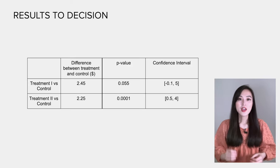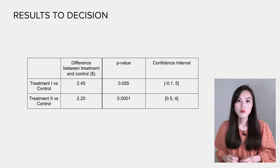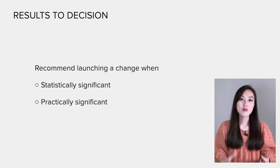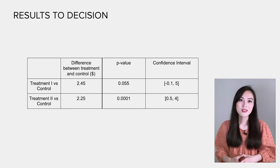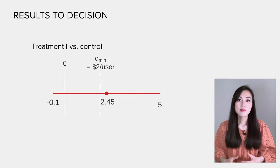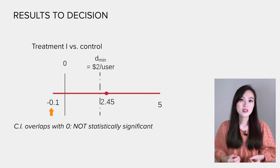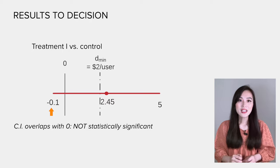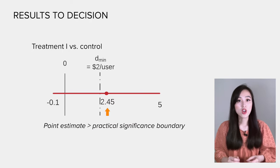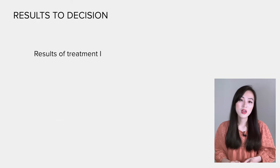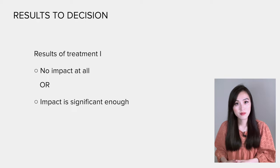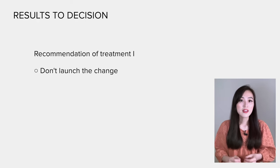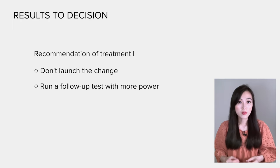Let's look at the results. Here's a table showing the experiment results, plotted with statistical and practical significance boundaries. We recommend launching a change if the result is both practically and statistically significant. For treatment 1 versus control, the result is not statistically significant based on the p-value, but it's likely practically significant since the point estimate is larger than the practical significance boundary. Because of this uncertainty — we can't tell if there's no impact or if it's significant enough to launch — we don't recommend launching. Running a follow-up test with more power would be helpful.